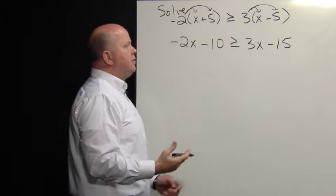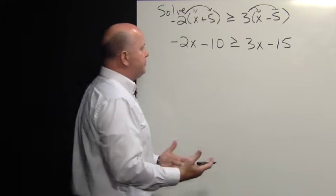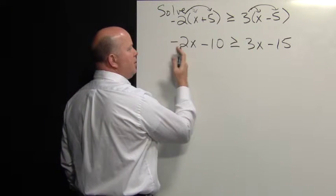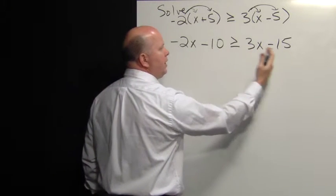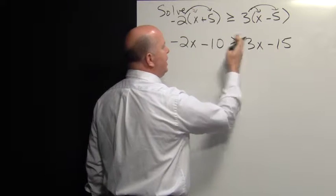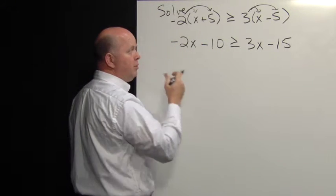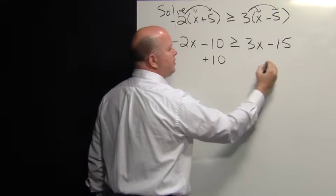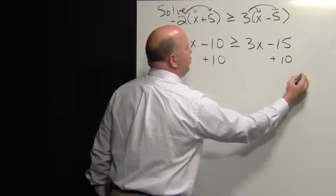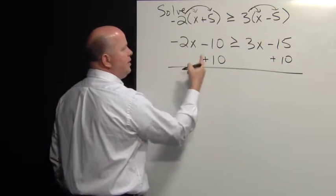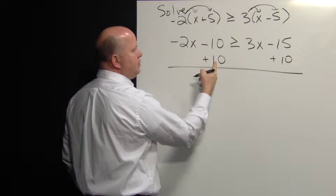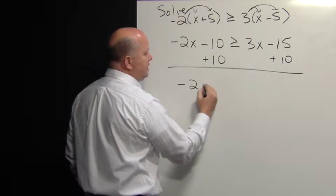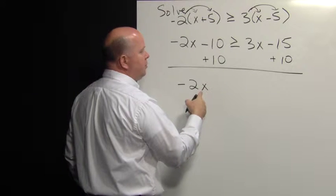Now we solve this using the properties of inequalities of addition and subtraction. We want to get all of the variables on the left-hand side and all the quantities on the right-hand side, since we don't have any exponent greater than one for our variables. If we add 10 to both sides, we'll see that negative 10 plus 10 is zero, so on the left-hand side we only have negative two X.